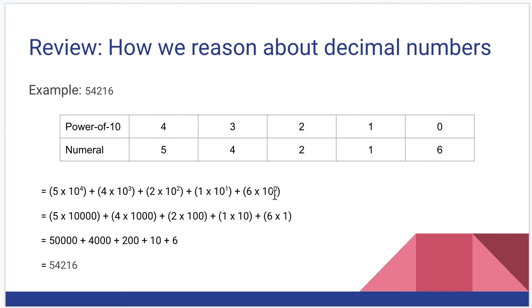6 times 10 to the 0, 1 times 10 to the 1st, plus 2 times 10 to the 2nd, plus 4 times 10 to the 3rd, plus 5 times 10 to the 4th. In other words, 5 times 10,000, 4 times 1,000, 2 times 100, 1 times 10, 6 times 1. We add all that together, we get 54,216.